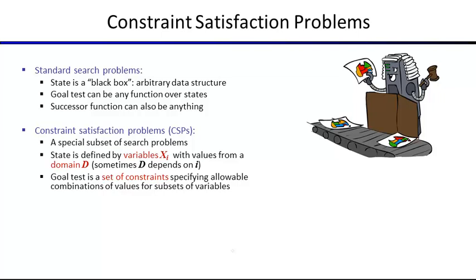Constraint satisfaction problems are a special type of search problem where we look inside at the structure. There are constraints imposed on the problem such that the state must be defined by a subset of the variables being assigned some values. In our running example — map coloring — the variables are each of the territories, the domains are the colors you can assign, and actions are coloring one more territory.